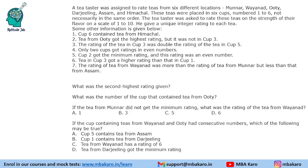Hello everyone, welcome to Aptitude Jab. This set from CAT 2017 slot 2 DILR says that a tea taster was assigned to rate teas from 6 different locations, and these teas were placed in 6 cups numbered 1 to 6.